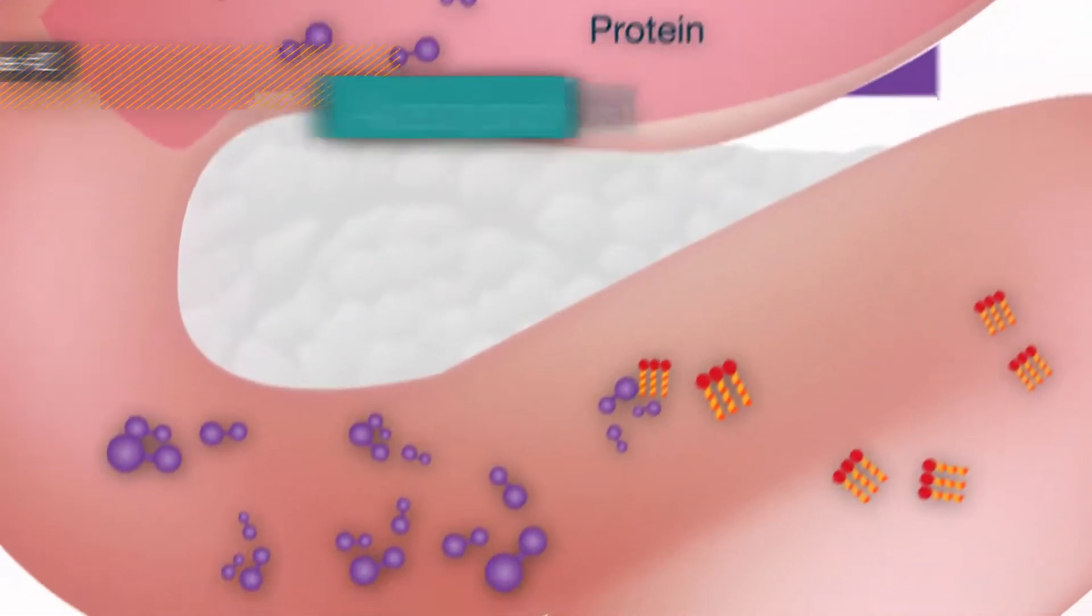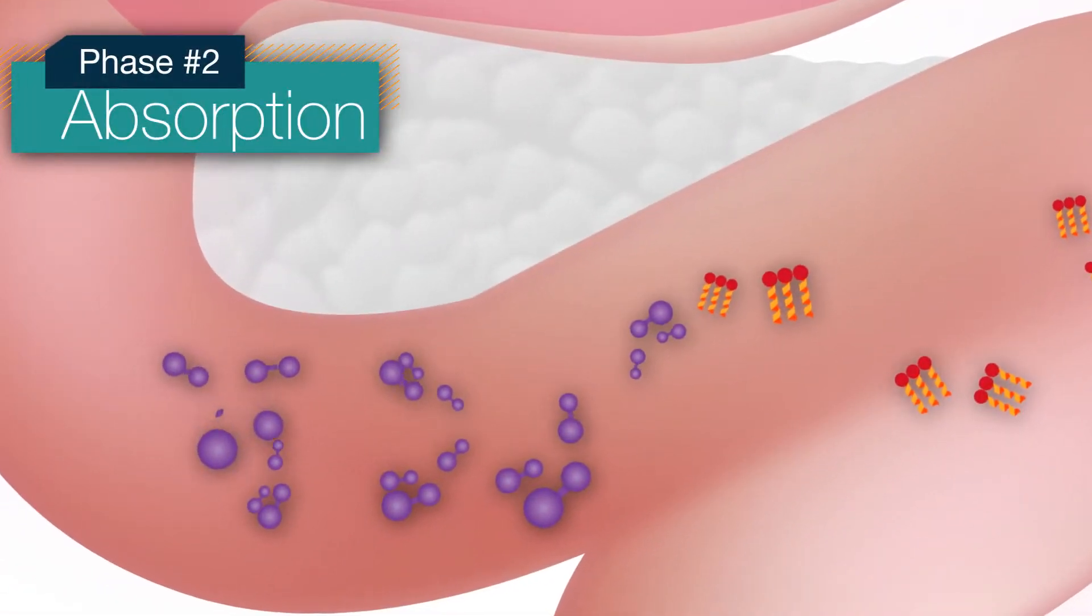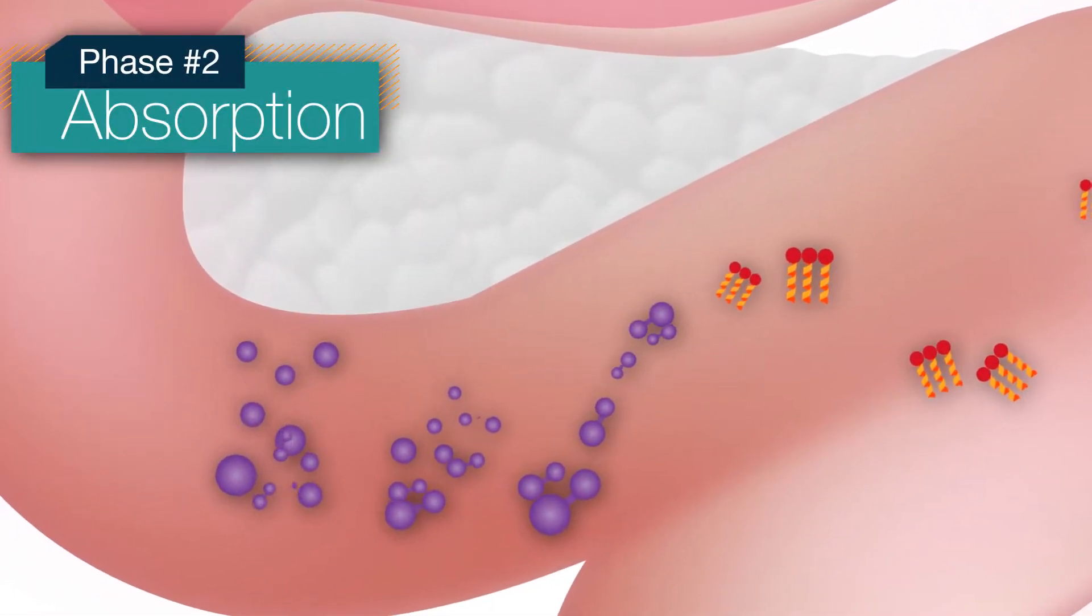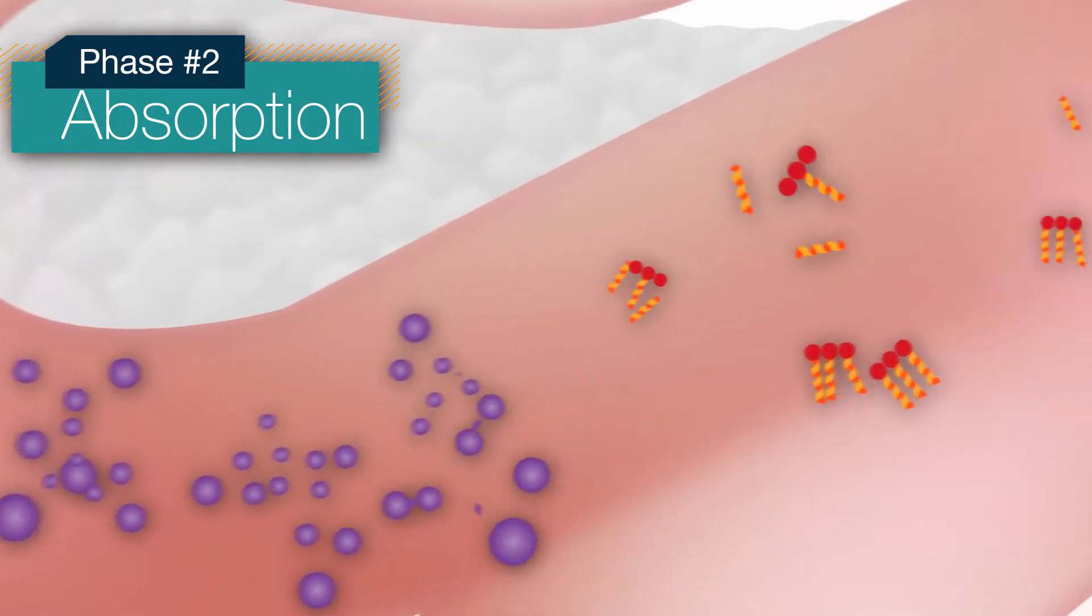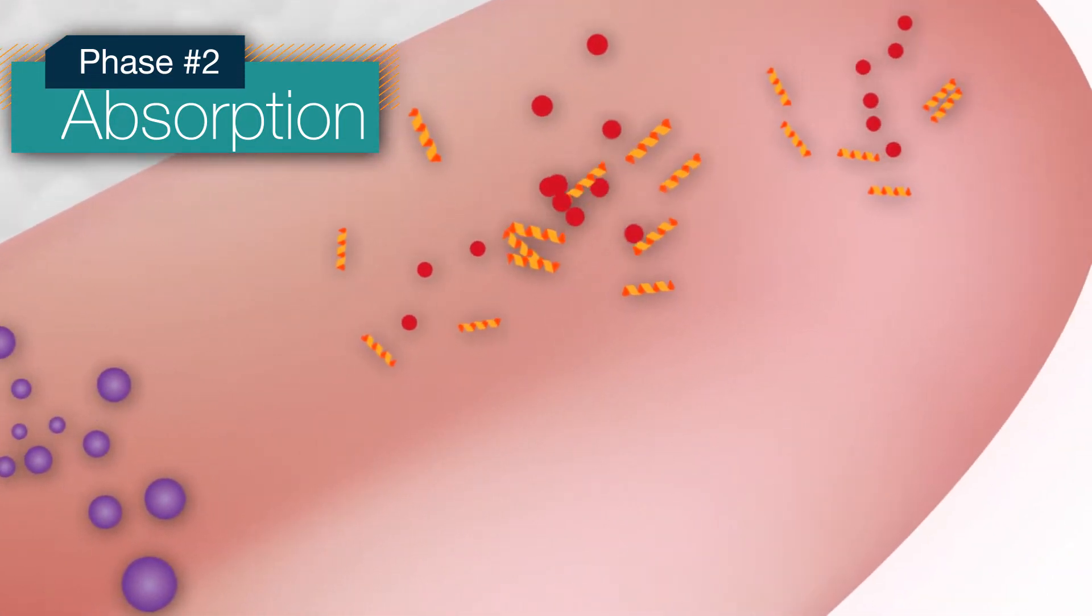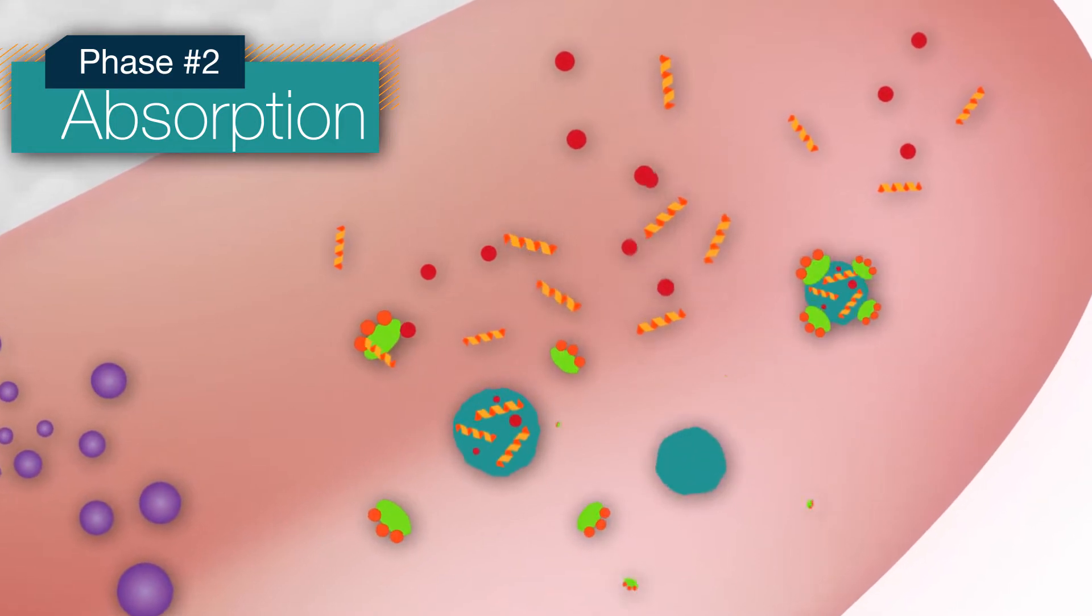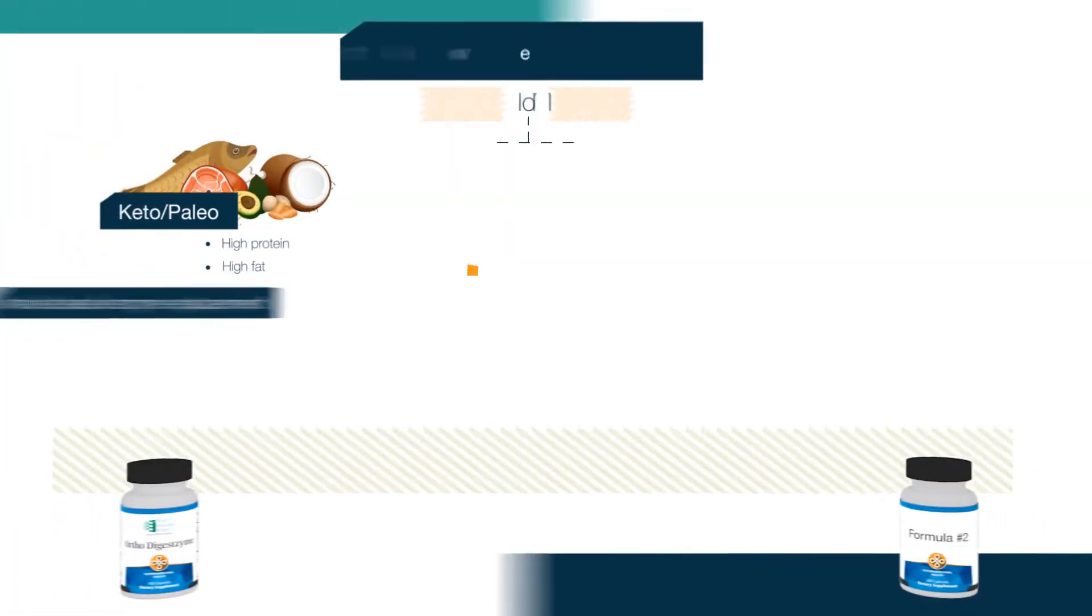In the absorption phase, high-concentration pancreatin, bromelain, and papain break down protein, while bile extract helps emulsify fat and alkalinize the intestines to keep our gut microflora in balance.